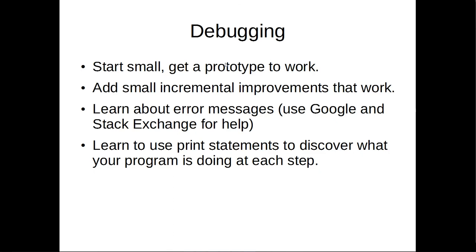For debugging, I like to start small — get a very small part of my program working correctly, and then add onto it with small incremental improvements until it does everything you want. Take some time to learn about error messages. Google is your best friend, and Stack Exchange is your second best friend — pretty much any question you have as a learner has probably already been asked and answered on that site. You can also use print statements to check the current state of your program, for example printing the type of a variable to make sure everything's working correctly.